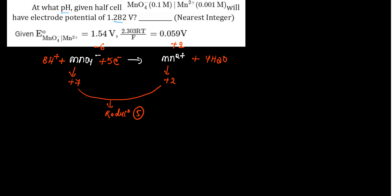So E of MnO4 minus upon Mn2 plus will be equal to E naught of MnO4 minus upon Mn2 plus minus 0.059 upon N. N is 5, 5 electrons ka exchange.